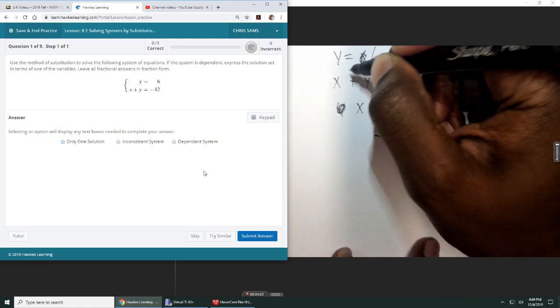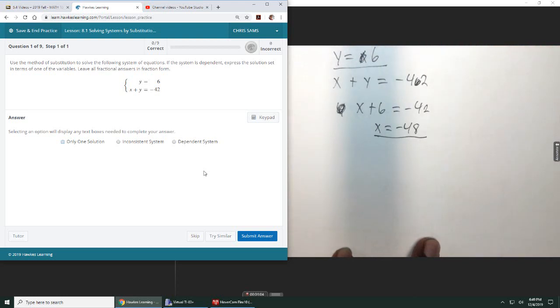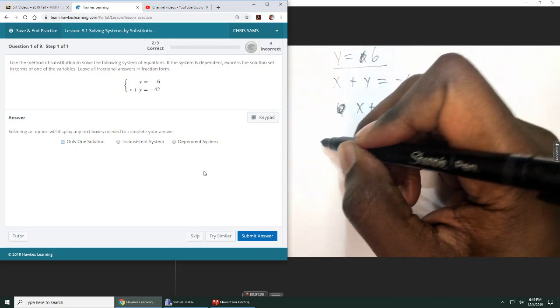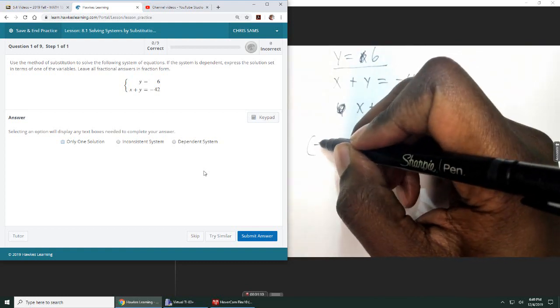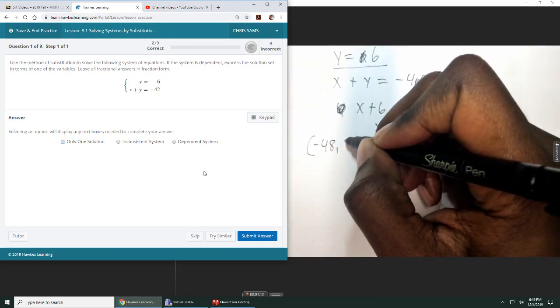So we have an x value, we have a y value. Any time we get one x, one y, that means we have one solution, and the ordered pair, the solution is negative 48, comma 6.